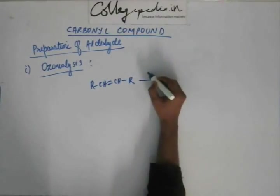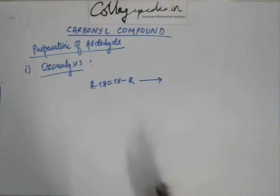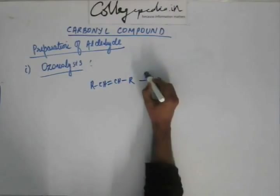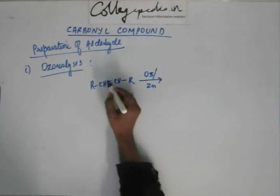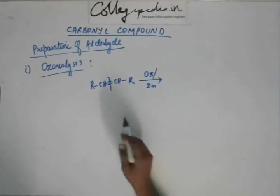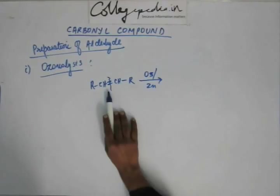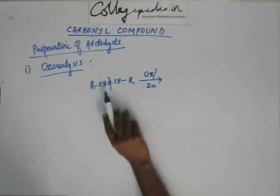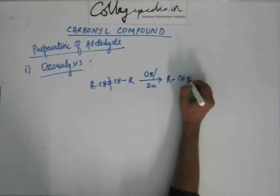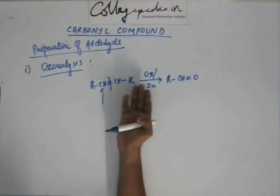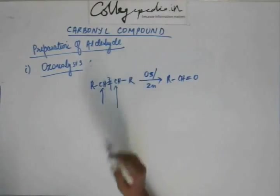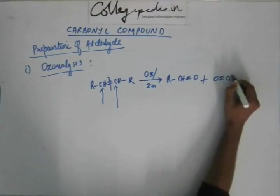Ozonolysis can be carried out on both alkene and alkyne. If carried on alkene, we use ozone and zinc — meaning there is a reductive ozonolysis. If you don't use zinc, the aldehyde will be oxidized and become a carboxylic acid. The reaction works by breaking the alkene into two parts, providing a C=O to each of the carbons that was involved in making the C=C double bond.